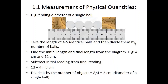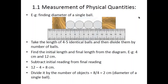Another example: finding the diameter of a single ball. If four balls are stacked and span from the 4 cm mark to the 12 cm mark on a scale, the total length = 12 − 4 = 8 cm. Divide by the number of balls: 8 ÷ 4 = 2 cm diameter per ball. Do not include the wooden block in your calculation.